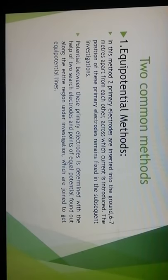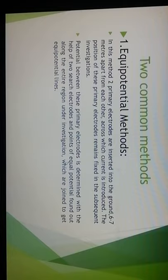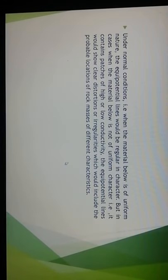Two common methods exist. The first is the equipotential method. In this method, two primary electrodes are inserted into the ground six to seven meters apart, across which current is introduced. The position of the primary electrodes remains fixed. The potential between them is determined using two search electrodes, and points of equal potential along the entire region under investigation are joined to form equipotential lines. Under normal conditions, when the material below is uniform, the equipotential lines are regular. When the material is non-uniform — with patches of high or low conductivity — the equipotential lines indicate probable locations of rock masses of different characteristics.